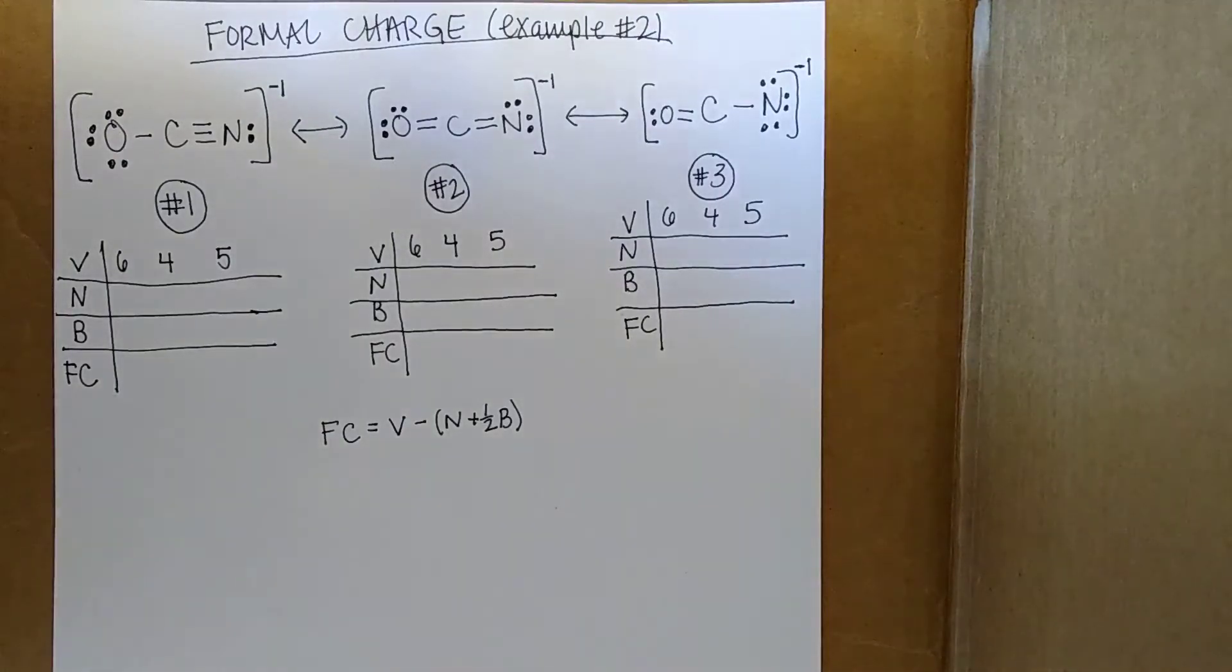Here's another example to decide which Lewis structure is most stable using the formal charge. This time we have three different structures that are all valid Lewis structures, but we want to determine which one is the best or which one contributes the most to the weighted average of these resonance structures.